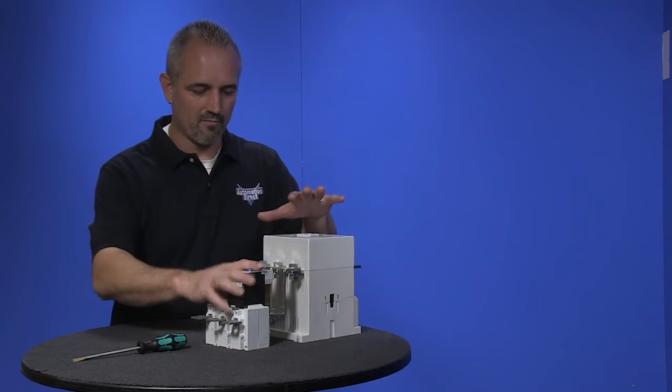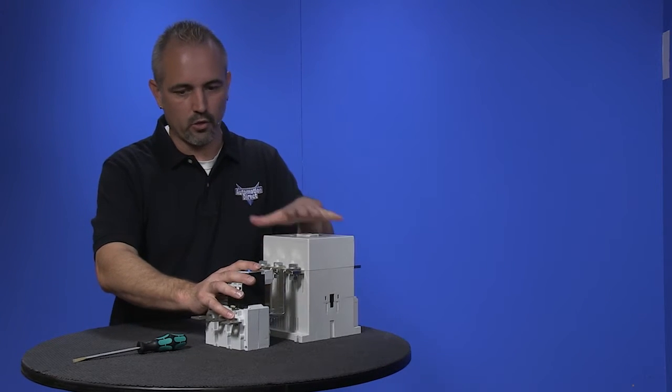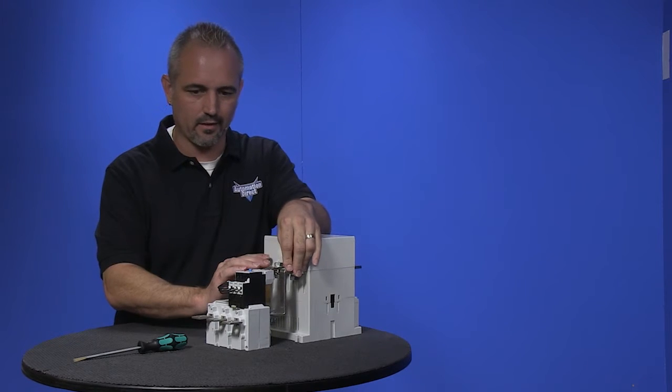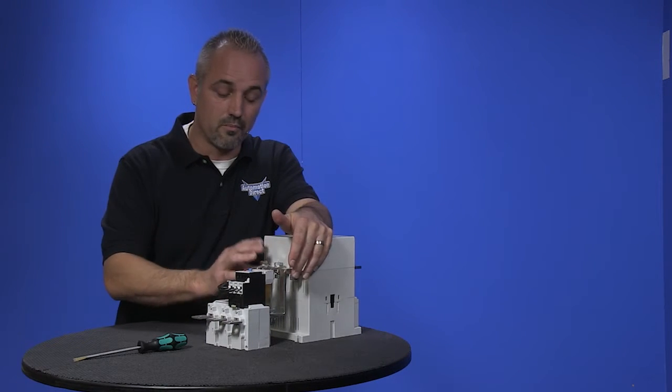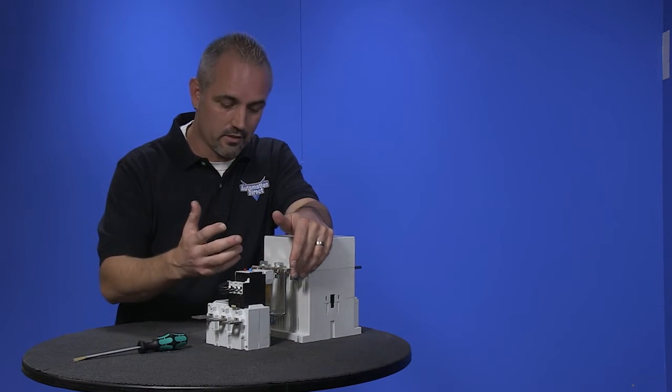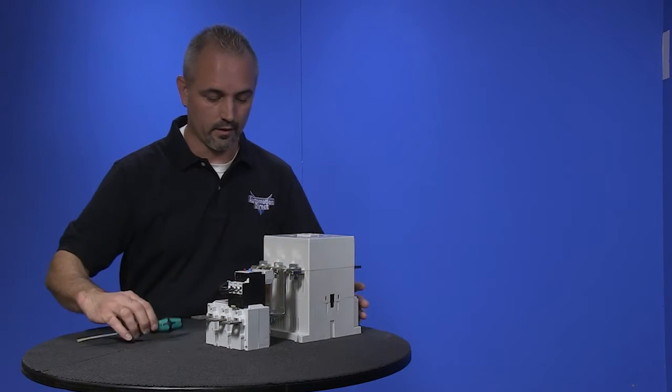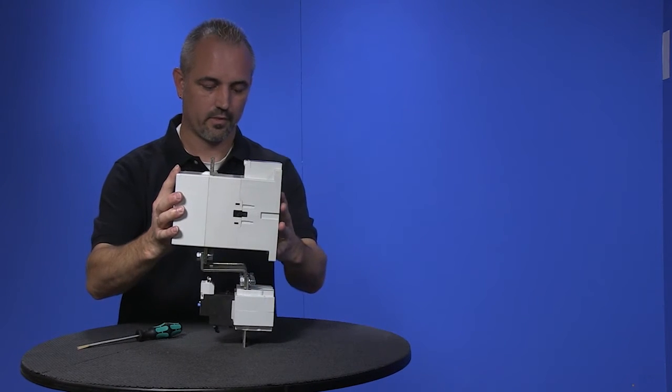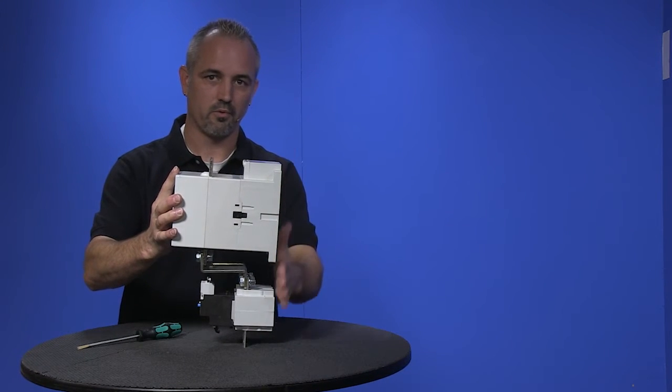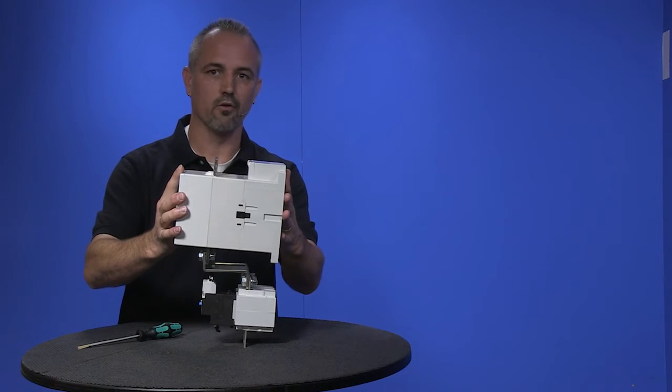So now I have my overload and my contactor both bolted together. Now I only hand tightened these bolts and nuts just for demonstration purposes, so make sure you use some wrenches and ratchets and tighten these up good. Now I can show you, it is one unit and if you notice, they are both on the same plane so you can mount them to your sub panel in your enclosure.